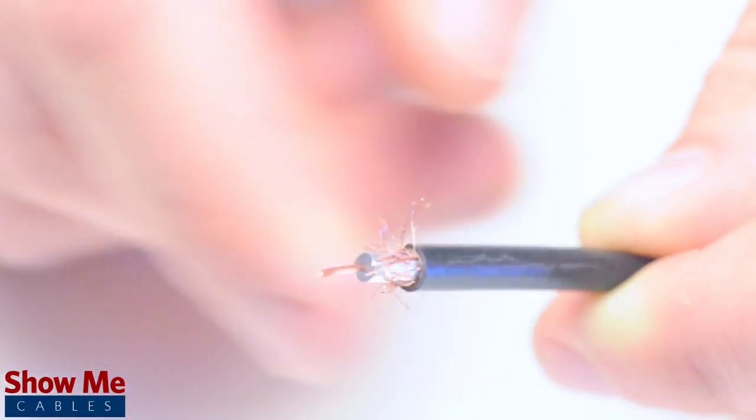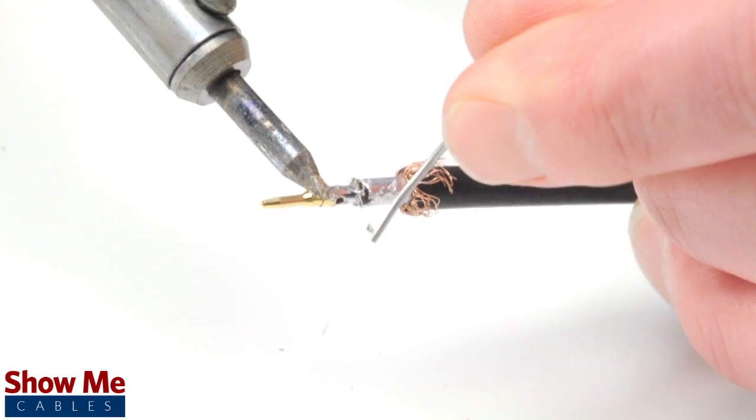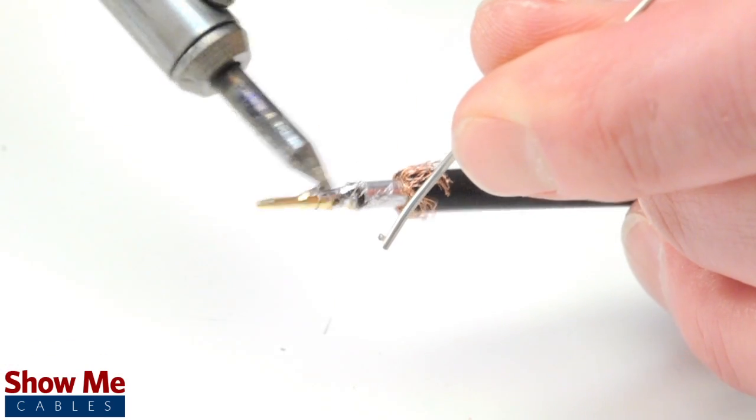Pull back the braided shield and insert the pin onto the center conductor. Solder the pin onto the center conductor and insert the connector housing over the cable.